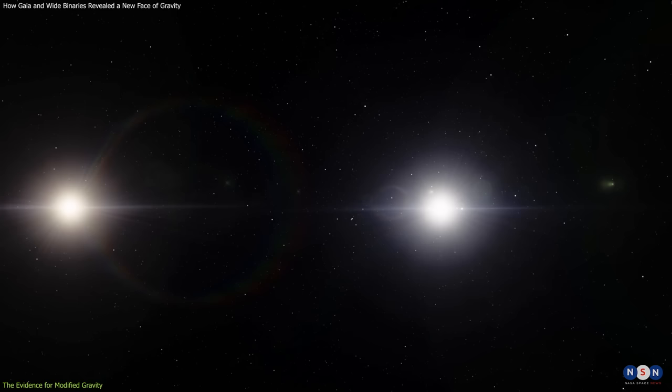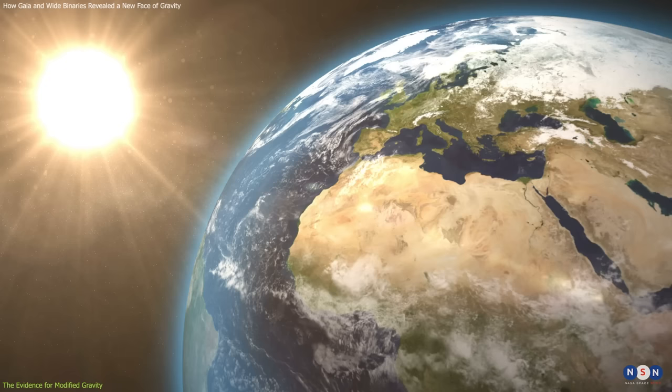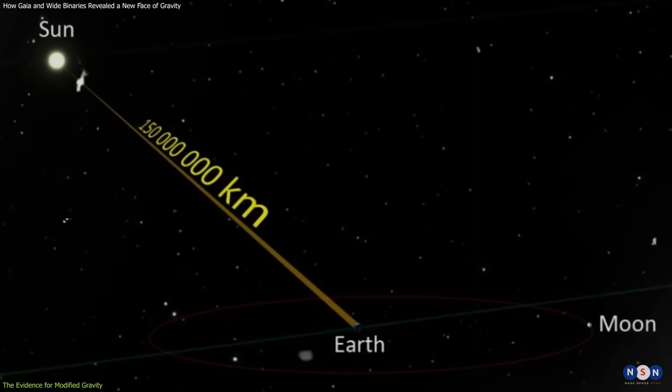Wide binary stars are pairs of stars that orbit each other with very large separations, typically hundreds or thousands of astronomical units. One astronomical unit is the average distance between the Earth and the Sun, which is about 150 million kilometers.